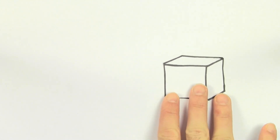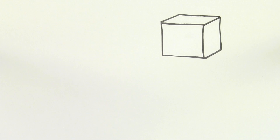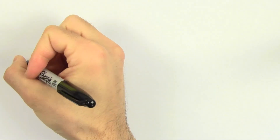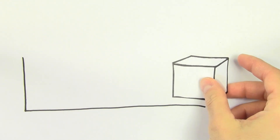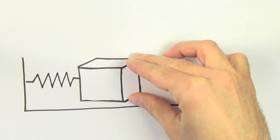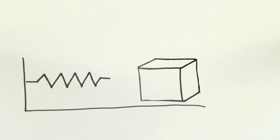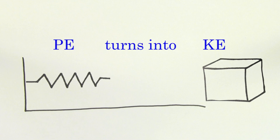This makes sense because if you do work against the gravitational force by lifting a mass in the air, you can get that energy back out by letting the mass fall down, turning potential energy into kinetic energy. Similarly, if you do work against the spring force by compressing a spring, you can get that energy back out by letting the spring decompress, which turns the stored potential energy into kinetic energy.